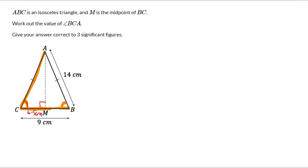Hopefully we can see that we have got a nice right angle triangle, so I'm going to just sketch that. We want this angle at the bottom, so I'm going to call that X. We know that the hypotenuse is 14, and we know that this side is 4.5.